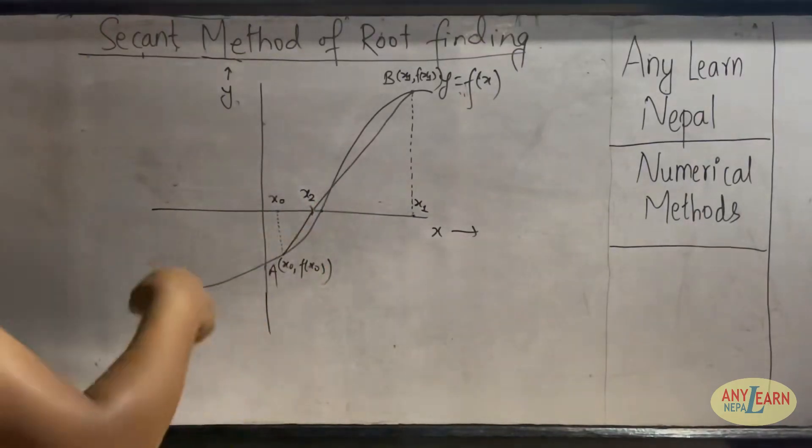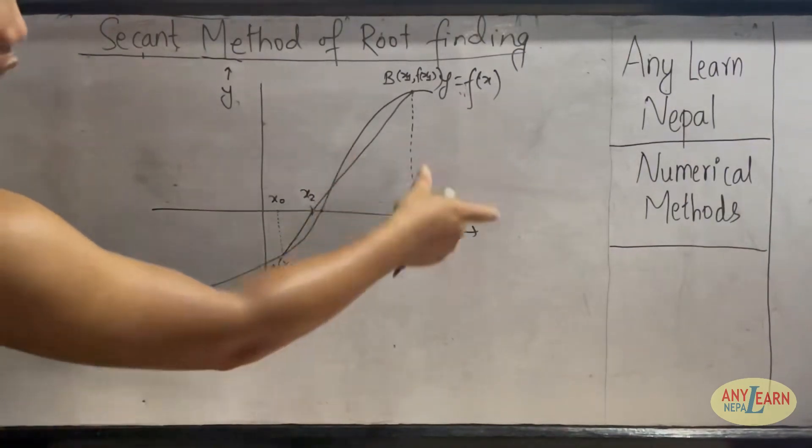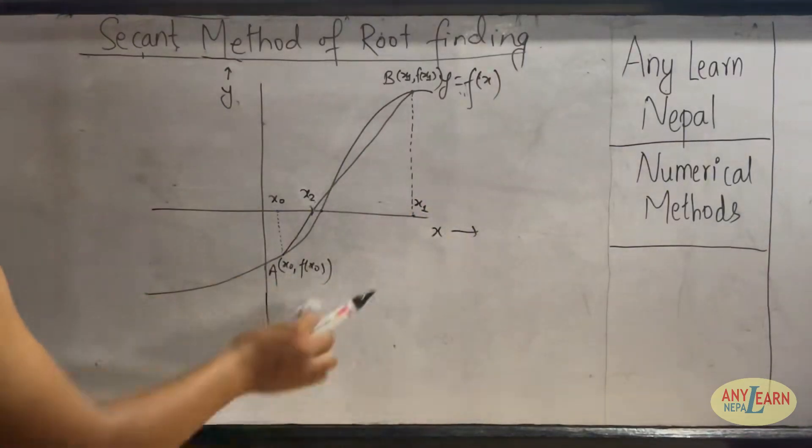Here we started with x0 and x1, now we got x2, a new point. Now we have to repeat the process taking x2 and x1 as the initial points, and from there we will get x3, and we will continue the process.